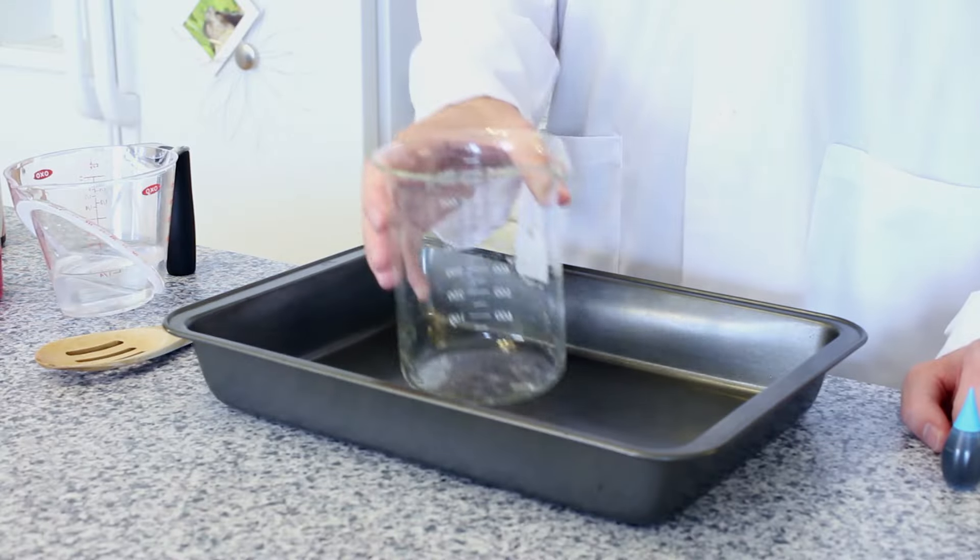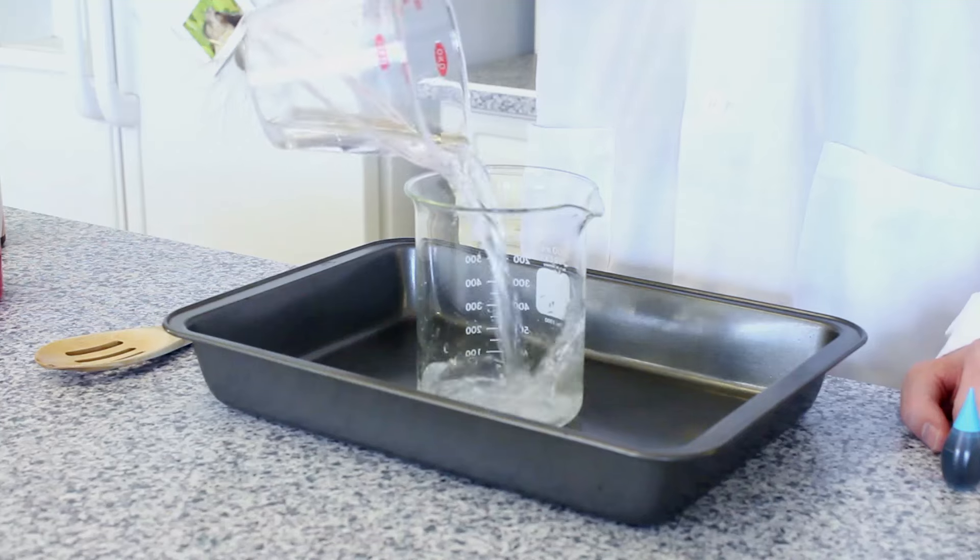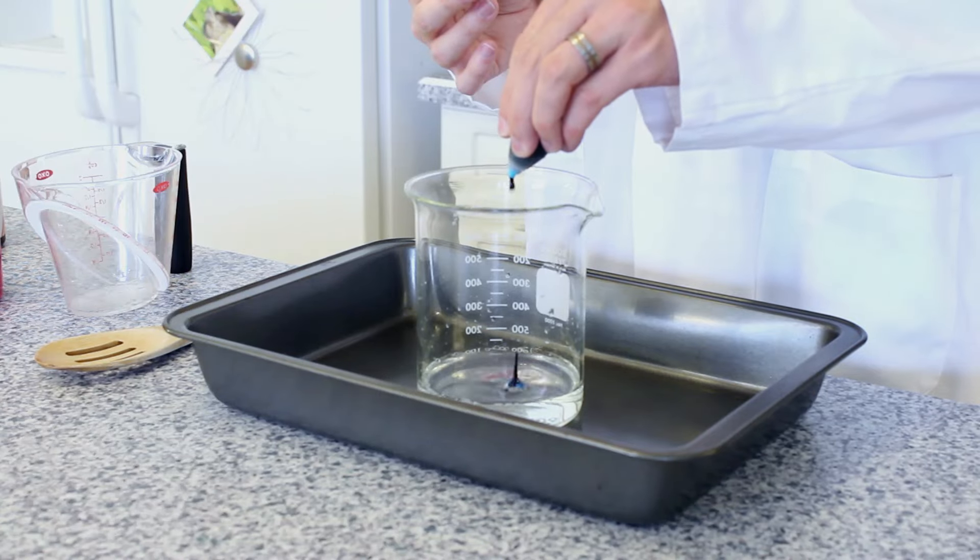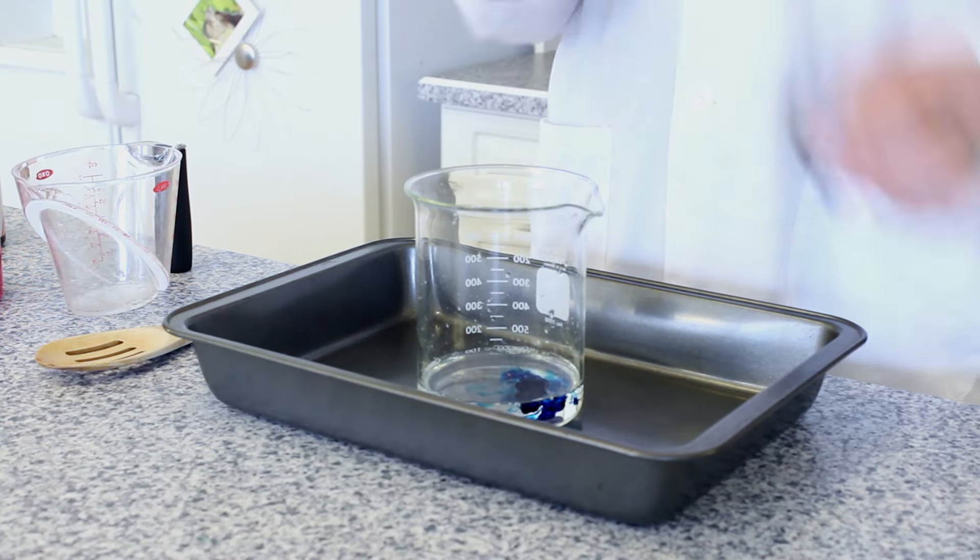While our yeast is activating, take your beaker and place it in the center of your tray. Add ½ cup of hydrogen peroxide into your beaker, then add a few drops of food coloring, and a squirt of dish soap.